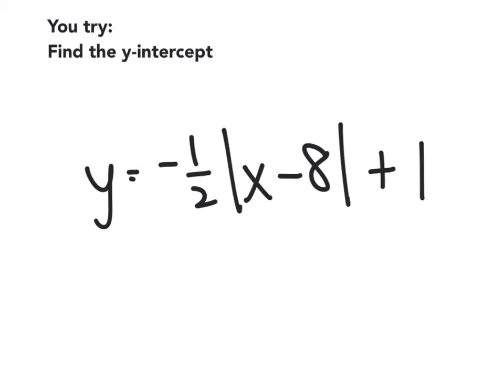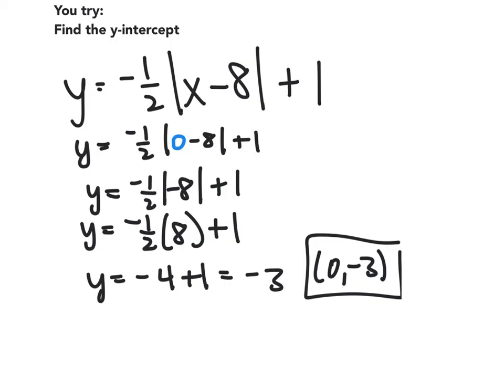All right, now try this one again. Find the y-intercept. All right, after going through all these steps, and you can pause the video if you need to, the y-intercept is at (0, -3). Remembering that we replace x with 0 and solve. Anything inside this absolute value bar will become positive. All right, goodbye.